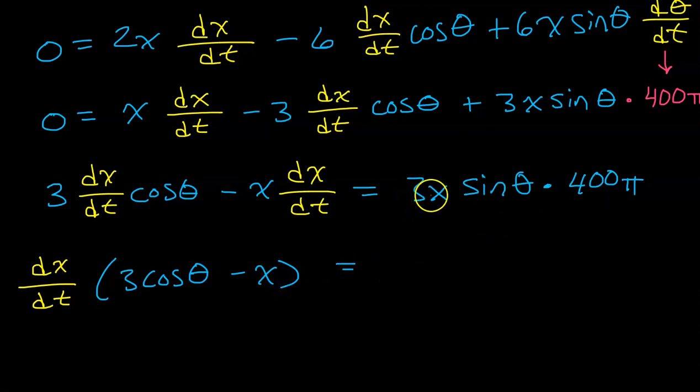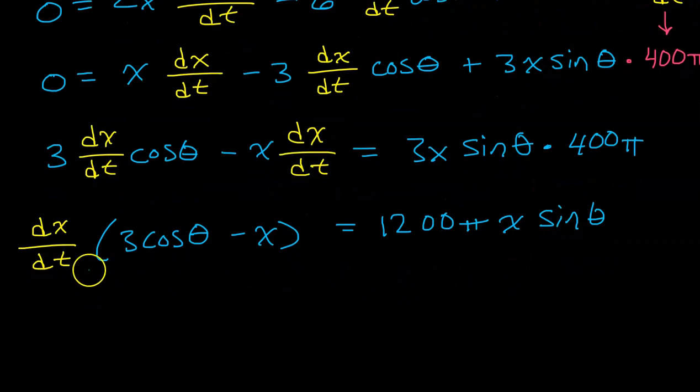The point of getting my dx dt terms on the left-hand side is so that I can factor out the dx dt as a GCF. So, I'm going to have my dx dt out in the front. And that's going to leave behind 3 cosine theta minus x. Maybe I'll go ahead and multiply these numbers together. So, 3 times 400 will be 1,200 pi x sine theta.